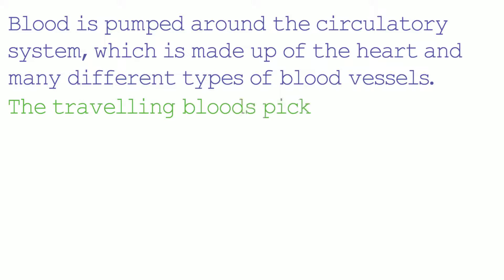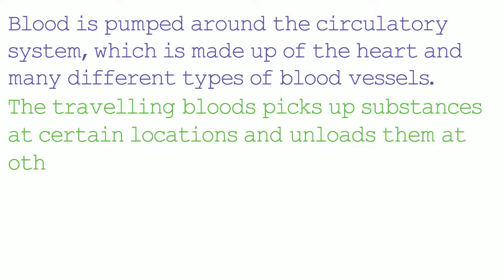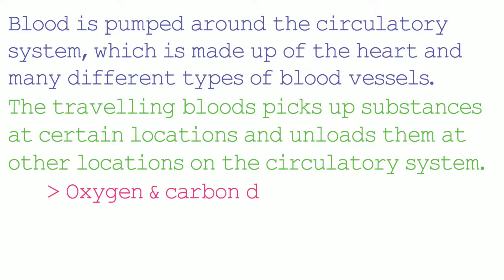The travelling blood picks up substances at certain locations and unloads them at other locations on the circulatory system. For example, oxygen and carbon dioxide are taken around the circulatory system.